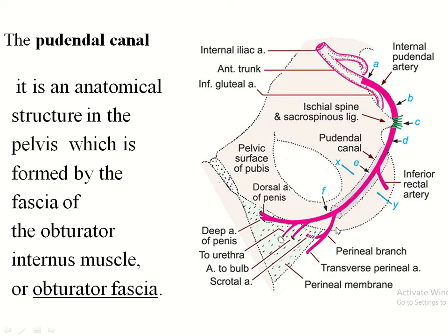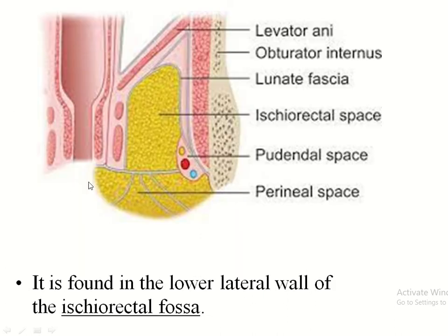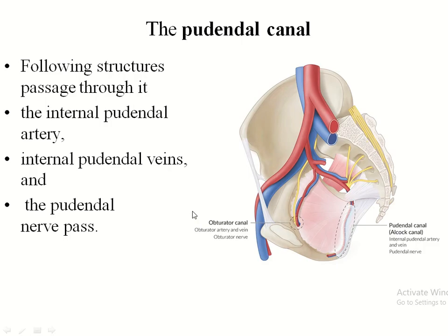This is the location of the pudendal canal. This is the ischiorectal fossa, and this is the lateral wall of the ischiorectal fossa. This is the location of the pudendal canal — this is the obturator internus muscle covered by the obturator fascia. So this pudendal canal is formed by the obturator internus muscle or obturator fascia.